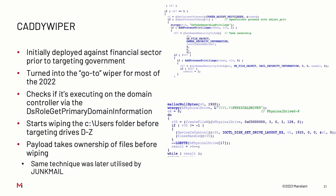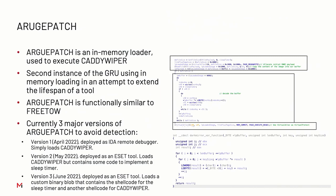We see this file ownership technique used again in tools like Junk Mail. CaliWiper was supposed to be used once or twice but ended up used all the time, and the reason they could do that was a tool we call AggiePatch. For the invasion, for the second time, they tried using an in-memory loader to obfuscate or hide their wipers, which makes it hard to detect. AggiePatch is actually pretty similar to FreeTow - one of the first tools we spoke about. It allocates read-write memory, reads a file from disk, writes it into memory, decodes it using a pretty flawed XOR algorithm, then does another VirtualAlloc to change that memory to executable and call it.